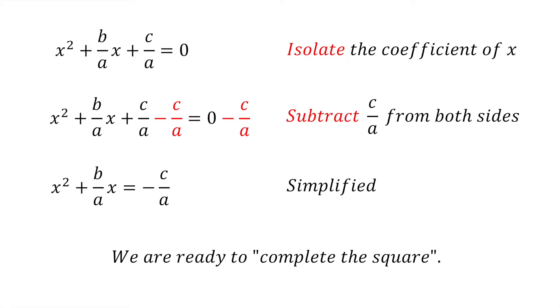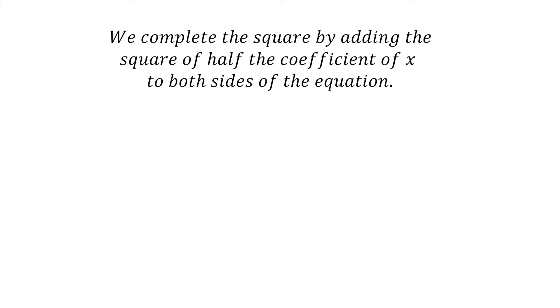The reason why we do this is to make the left hand side of the equation easy to factorise. To complete the square, we take half of the coefficient of x and square it. We then add this new term to both sides of the equation.